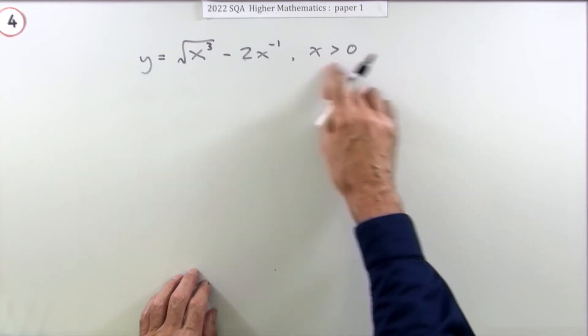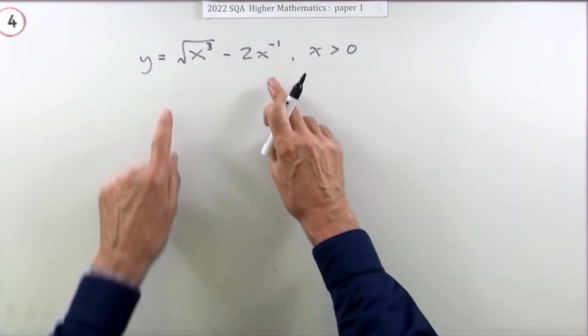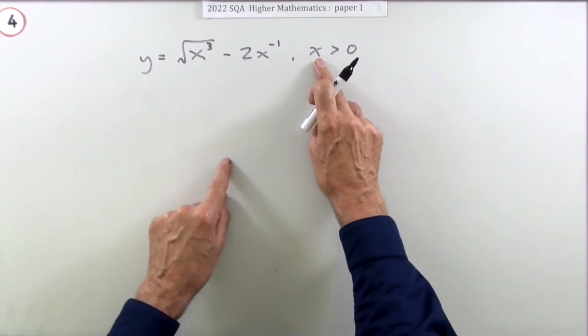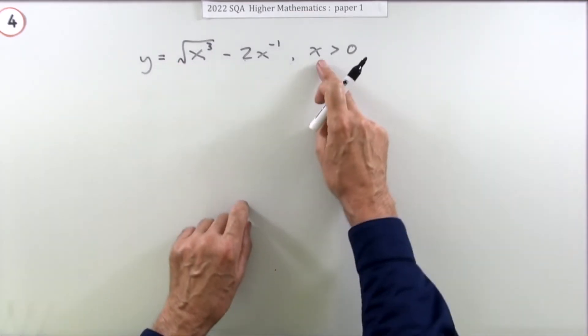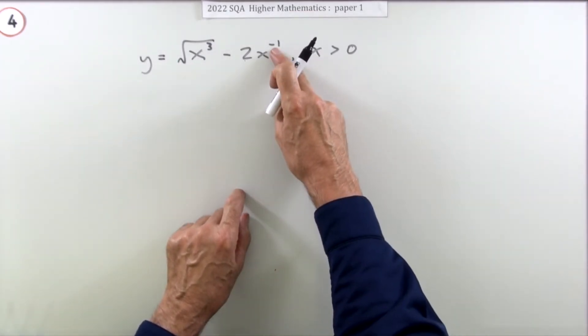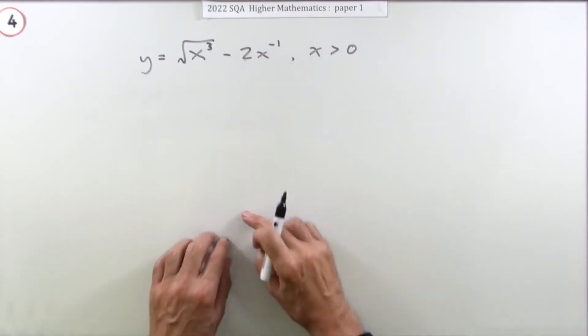That's just a little bit of legal jargon, just saying that in this expression x couldn't be negative because you can't get the square root of a negative and x can't be 0 because negative 1 means 1 over x and you can't divide by 0.